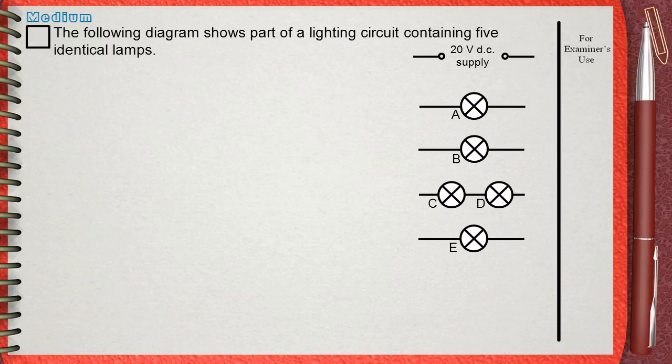The following diagram shows part of a lighting circuit containing five identical lamps. Lamps A, B, C, D and E are five identical lamps.